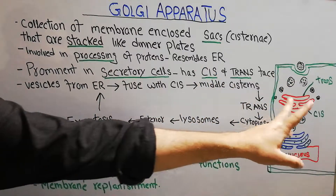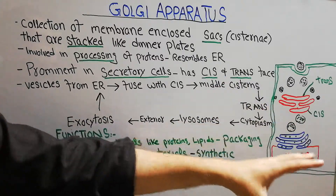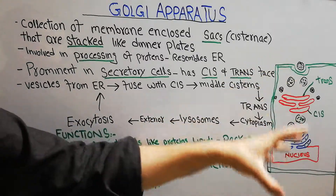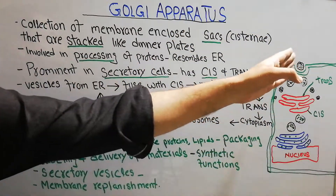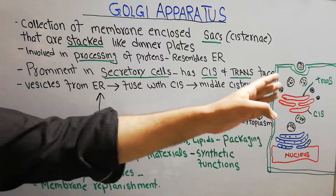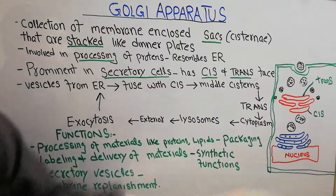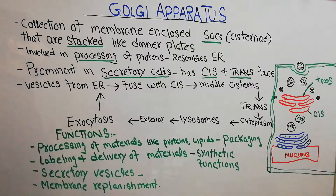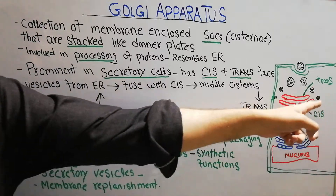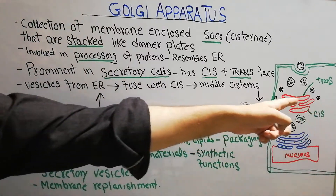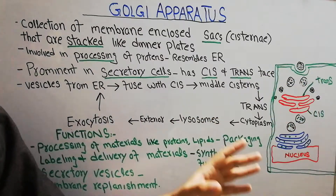Different people have called it by different names, but it is true that the Golgi apparatus receives proteins, processes them, and sends them to different parts. It may send them outside the cell where they are needed, to lysosomes where proteins may act as enzymes to speed up reactions, or directly into the cytoplasm where they may be required for different types of reactions.